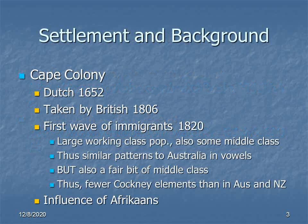In terms of history, I've already said a bit about it in past lectures, but just to recap: the Cape Colony was settled by the Dutch in 1652 and taken by the British in 1806. In 1820, the first wave of immigrants arrived, mostly a working class population, but also some middle class. Several of the elements that inform Australian and New Zealand English — coming out of, for example, Cockney — are present in South African English, but due to the middle class presence, not quite as noticeable.